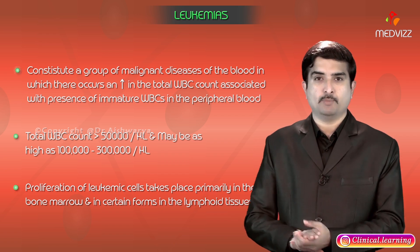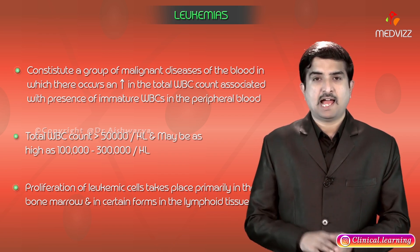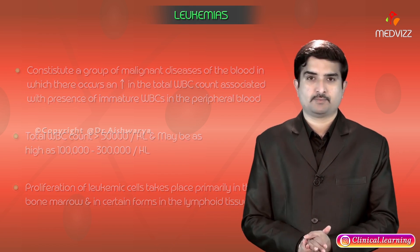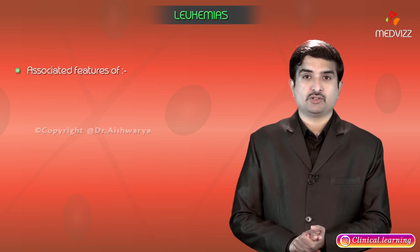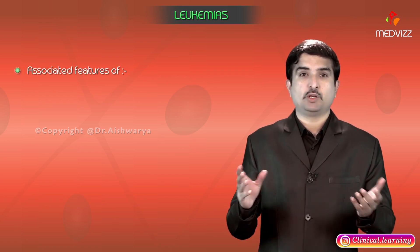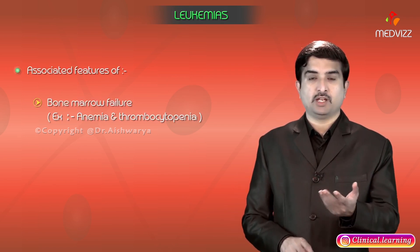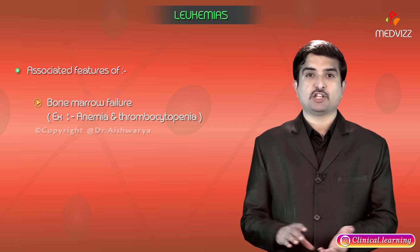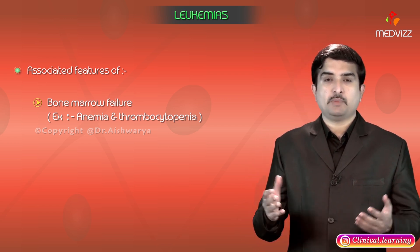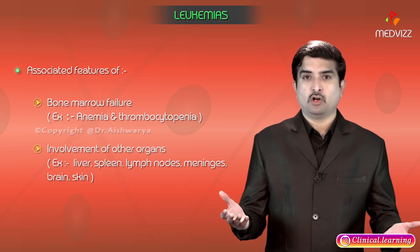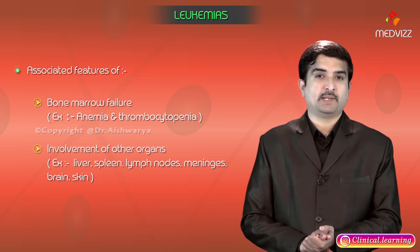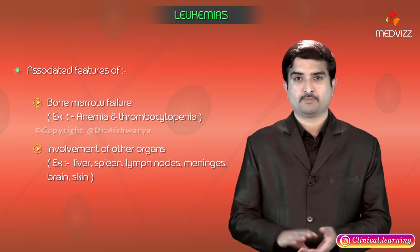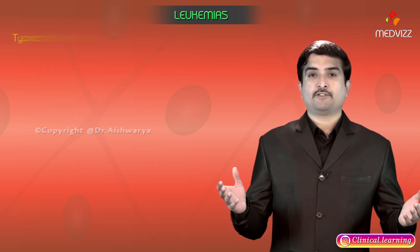The proliferation of leukemic cells takes place primarily in the bone marrow as well as in certain forms of lymphoid tissues. Associated features of leukemias include bone marrow failure, with anemia and thrombocytopenia. Leukemia can also involve other organs like the liver, spleen, lymph nodes, meninges, brain, and skin.